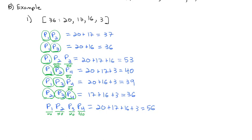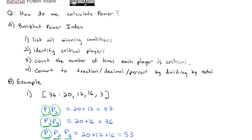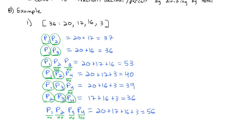We've now identified all the critical players in all the winning coalitions. Our next step is to count the number of times each player is critical. Player 1 was critical 5 times. Player 2 was critical 3 times. Player 3 was critical 3 times. Player 4 was critical 1 time.